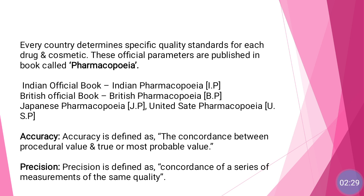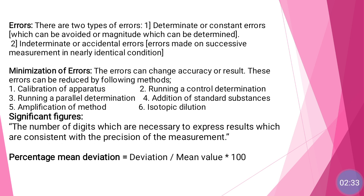Then the next one is error. An error is a mistake — something done wrong that causes the results to come out wrong. There are two types of errors: the first is determinate errors, and the second is indeterminate errors.